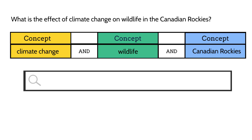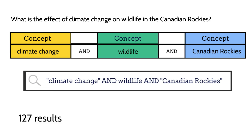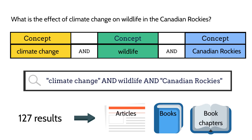Now Naya is ready to conduct her search, combining all these concepts. She searches for climate change and wildlife and Canadian Rockies. Naya puts quotation marks around "climate change" and "Canadian Rockies" to keep those words together as a phrase. Naya gets 127 results.